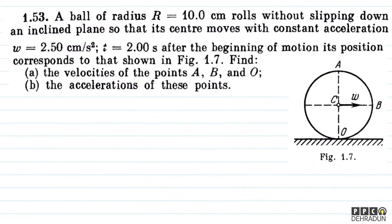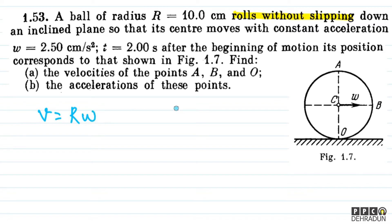The problem says rolls without slipping, so this means pure rolling is here. For pure rolling on the ground, we can see that V is equal to R omega, and A is equal to alpha R.